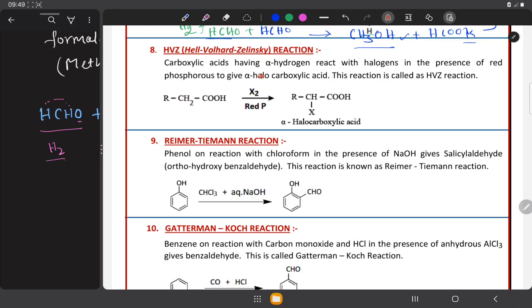We will try to understand the meaning of the statement. Carboxylic acids means the compounds which are having COOH as a functional group having alpha hydrogens. What is alpha hydrogen? The carbon atoms next to the functional group is called alpha carbon. This is alpha carbon and this carbon is having two hydrogen atoms. These two are alpha hydrogens.